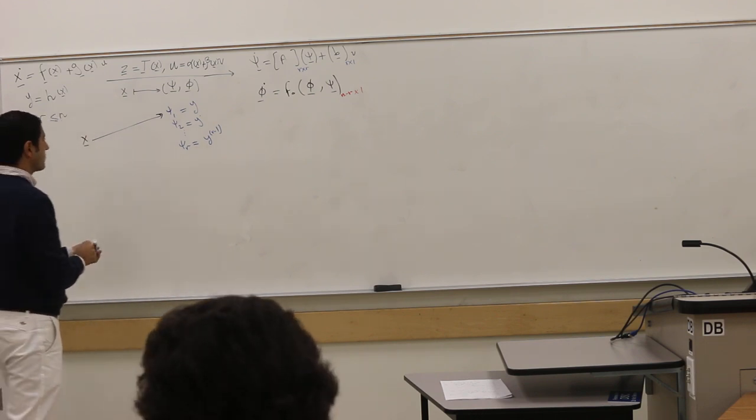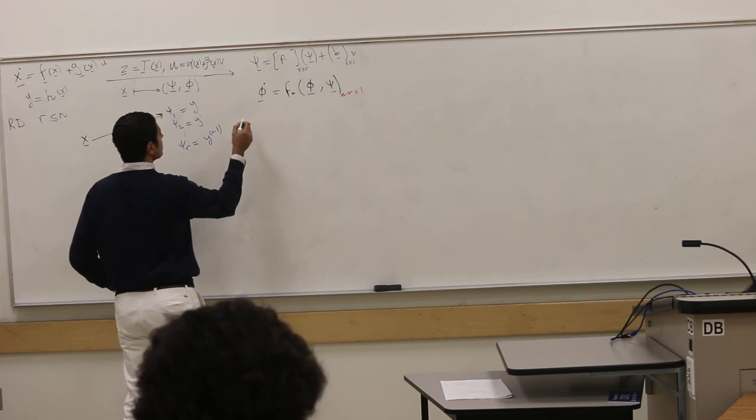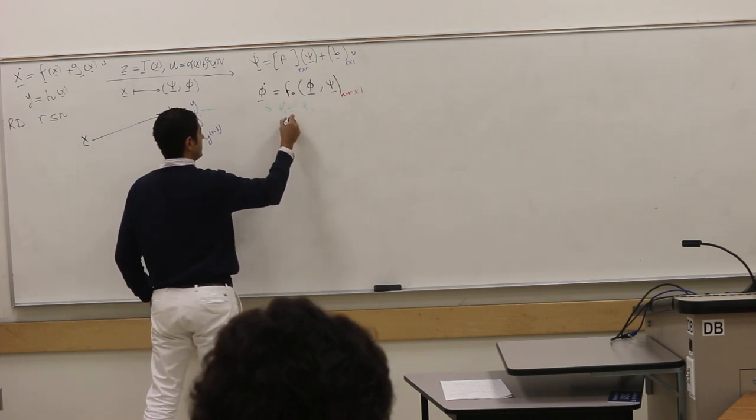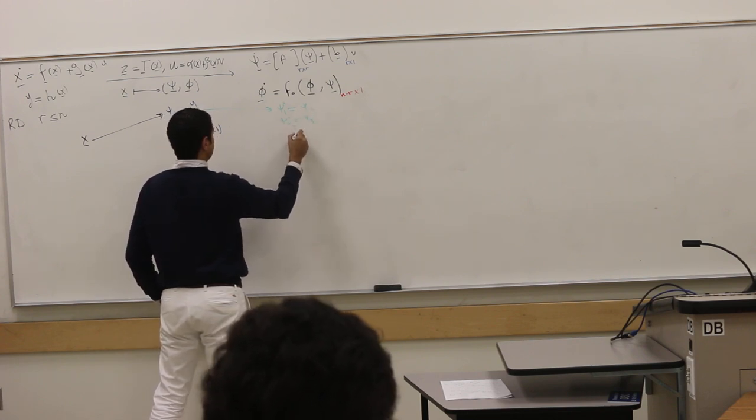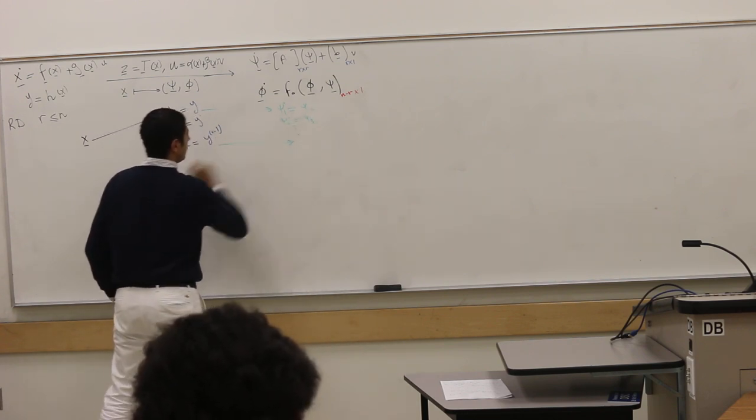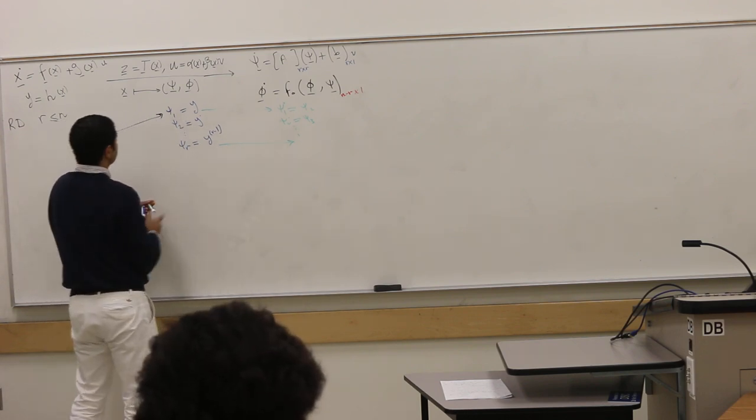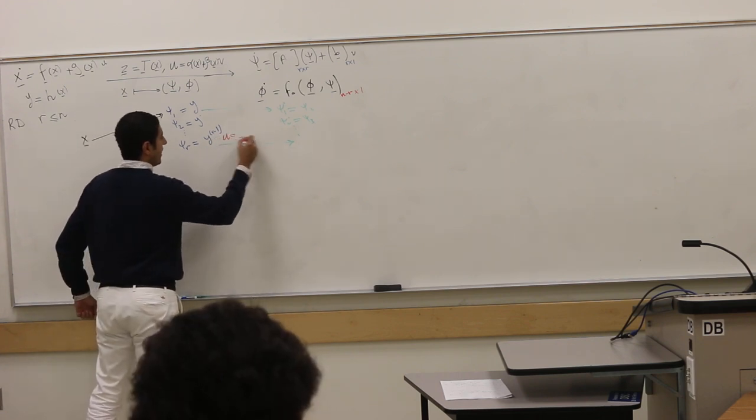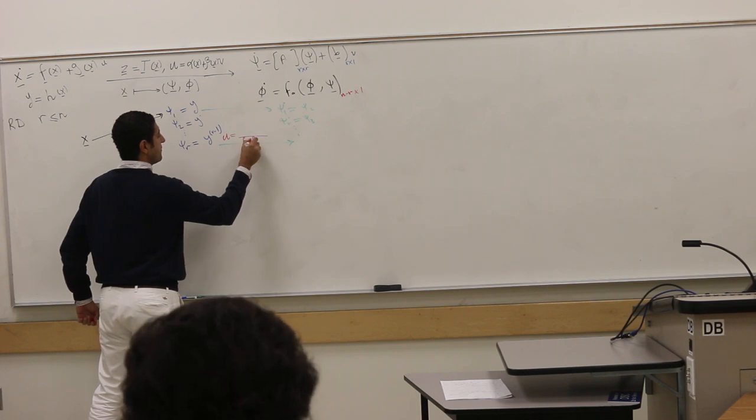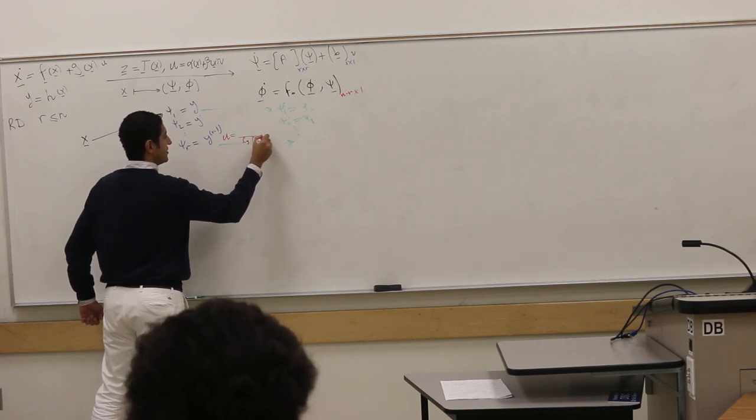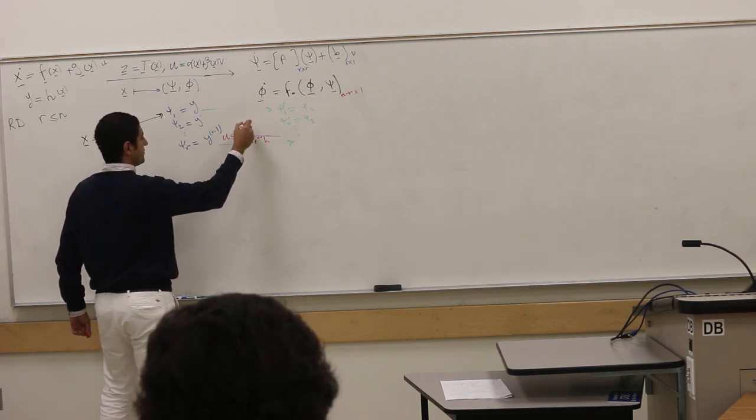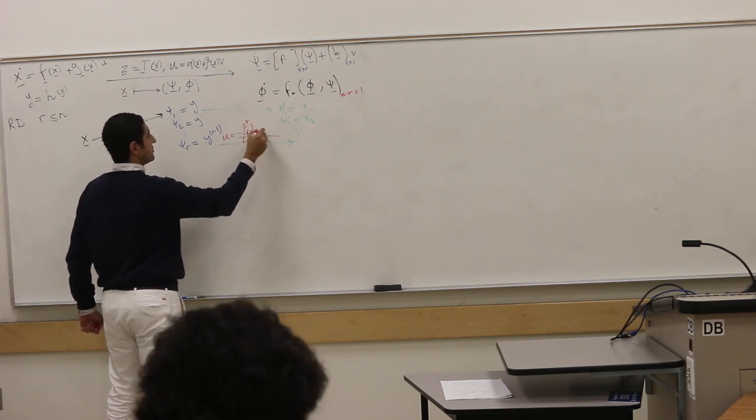Here is the control law, the feedback control law. By definition, this gives you ψ₁ dot is ψ₂, ψ₂ dot is ψ₃, and so on. Using this feedback control law, by definition of relative degree, we have L_g L_f^(R-1) H is nonzero, so I can divide and cancel my nonlinear dynamics. This is R H plus V.